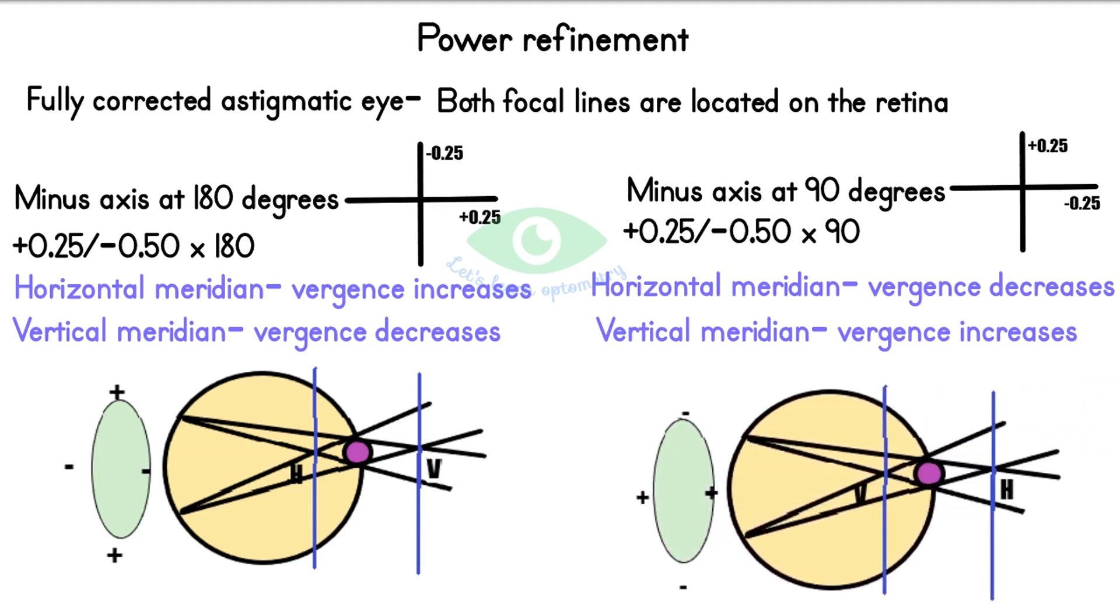Note that the interval of Sturm and the size of circle of least confusion are same in both positions. So if we do power refinement with JCC in a properly corrected astigmatic eye, the patient will say equal clarity in both the positions.